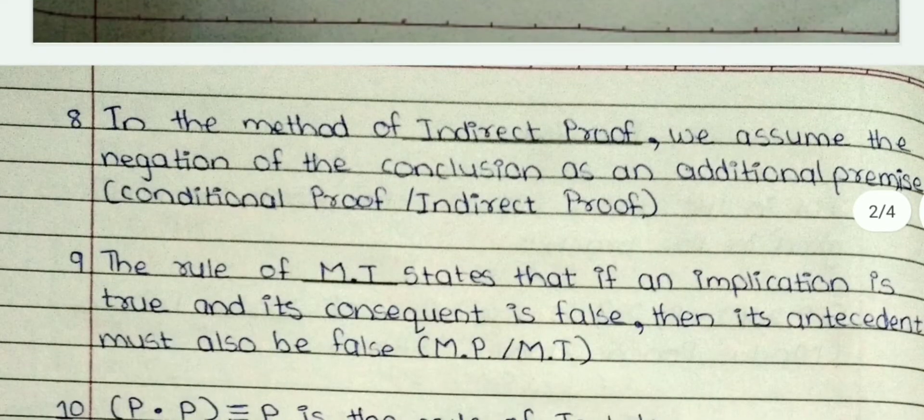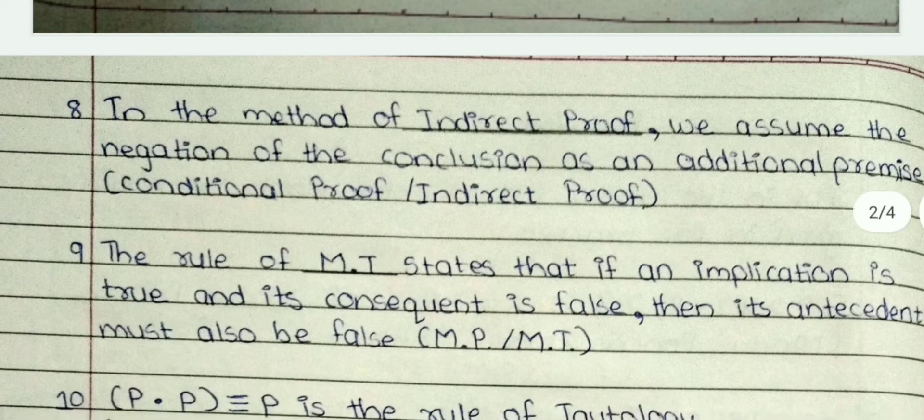Eighth: in the method of dash, we assume the negation of the conclusion as an additional premise. The answer is indirect proof.